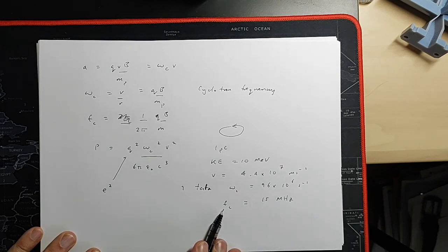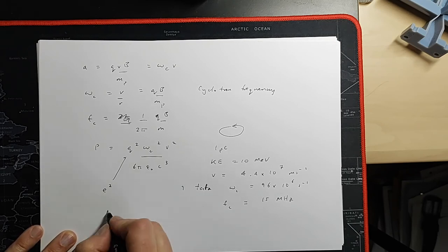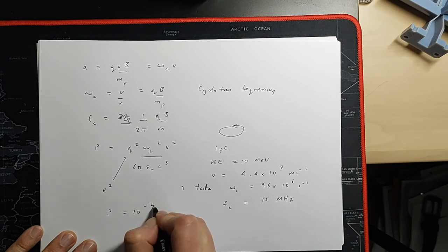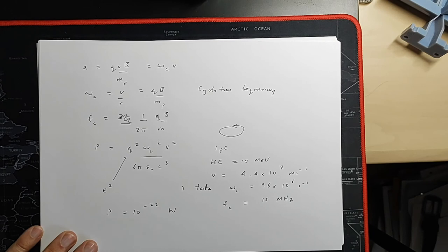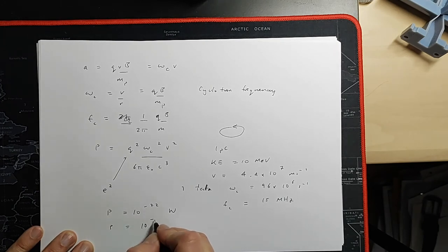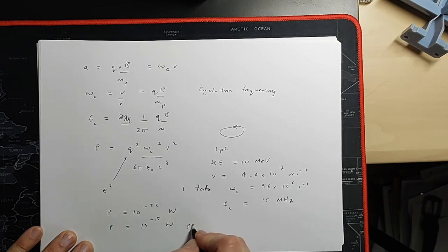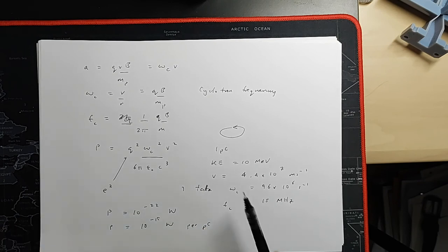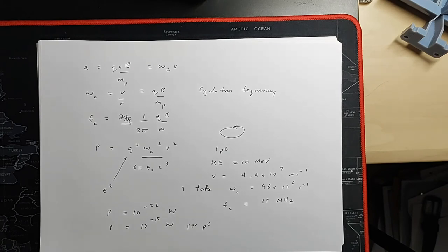And remember, the cyclotron frequency is independent of the velocity. So, this cyclotron frequency applies for any kinetic energy. We'll see that's not quite true, and we'll come back to that in a moment. But if we calculate the power emitted per proton, it's something like 10 to the minus 22 watts. That's a continuous amount of power wherever the proton is in its orbit. Per picocoulomb, that is something like 10 to the minus 15 watts per picocoulomb. So, despite the fact we have very many protons circulating in our magnetic field, the total power emitted is very, very small. Now, that's for one picocoulomb of charge.